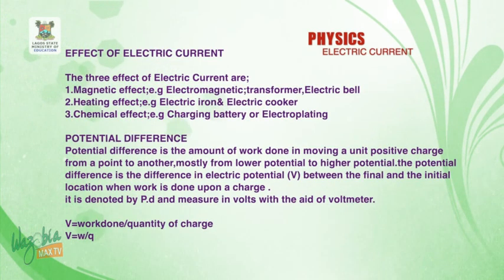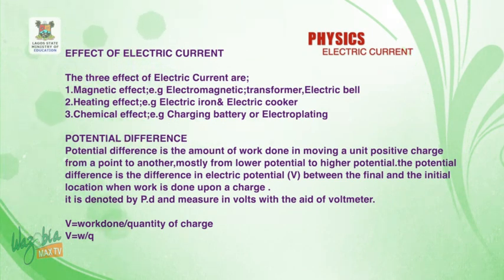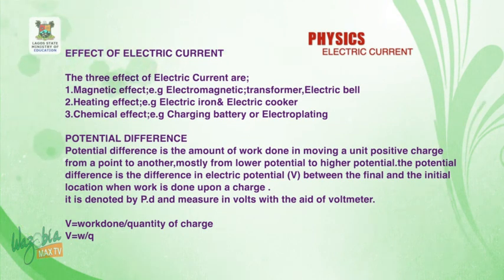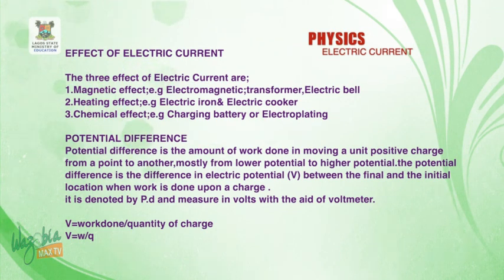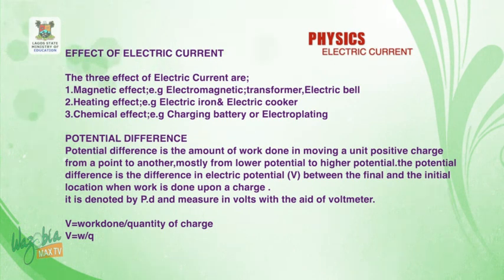Now, the effects of an electric current. There are three basic effects of an electric current. One: magnetic effect. When we talk about magnetic effect, this is when electric current flows in a magnet, and we are talking about electromagnetism. For example, your transformer or your electric bell.